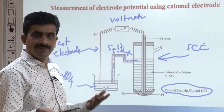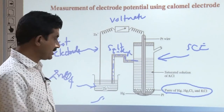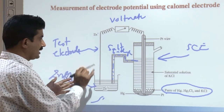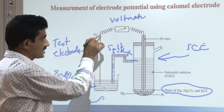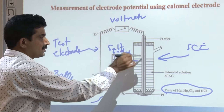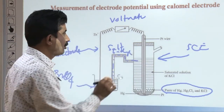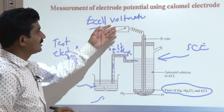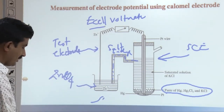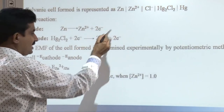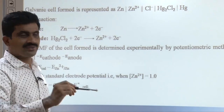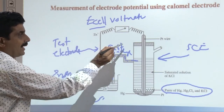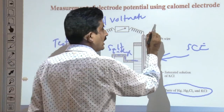The cell is represented as: Zn | Zn²⁺ ‖ Hg₂Cl₂ | Cl⁻. The anode is written on the left — zinc is the anode — and the saturated calomel electrode is the cathode. Two vertical lines represent the salt bridge. At the anode, oxidation occurs: Zn → Zn²⁺ + 2e⁻. These electrons migrate to the cathode, where the cathodic reaction is: Hg₂Cl₂ + 2e⁻ → 2Hg + 2Cl⁻.